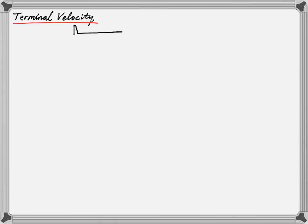This is a screencast on terminal velocity and interpreting motion graphs. We're going to use the example of a skydiver falling out of a plane. Here's our plane, here's our skydiver, and we're going to say the skydiver has a mass of 75 kg.